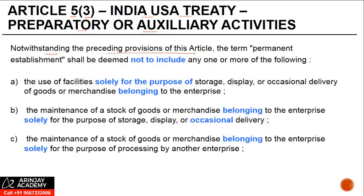Notwithstanding the preceding provisions of this article. What this means is that this particular clause or paragraph overrides Paragraph 1 and 2, which means that even if there is a fixed place of business in India, even if it is included within the examples of Paragraph 2, if the activities are something which is covered under Paragraph 3, it would not amount to a PE. Even for agency PE, which you are going to see subsequently in Paragraph 4 and 5, if the activities carried out by the agent fall under the purview of these activities, then also the view is that it should not result in a formation of PE.